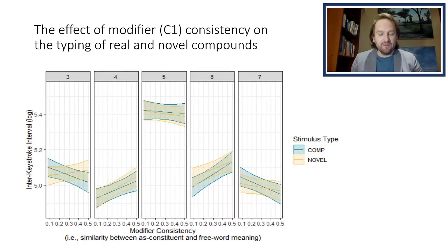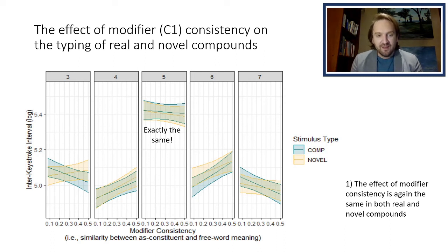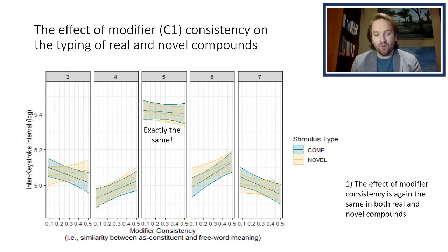It is again illustrative to compare results from compound and novel compound stimuli, where we see that the effect is exactly the same for modifier consistency. We again see the same effects at position four and six, which leads us to conclude that the processing of compounds around the boundary is driven more by constituents than by the whole word.